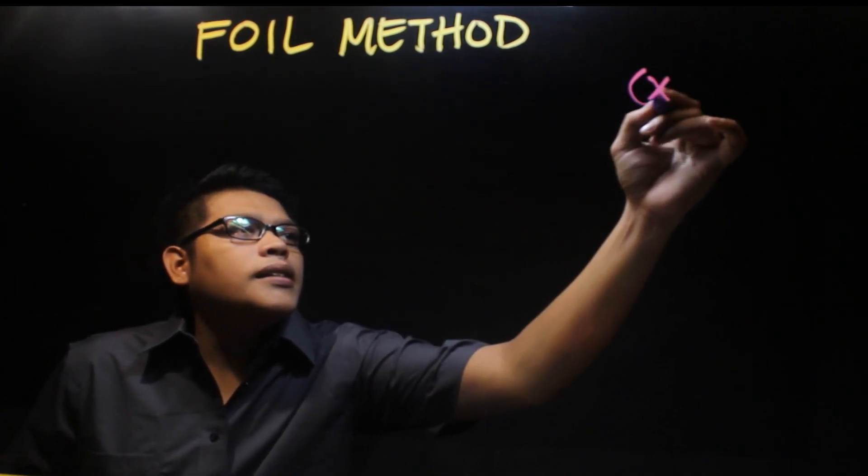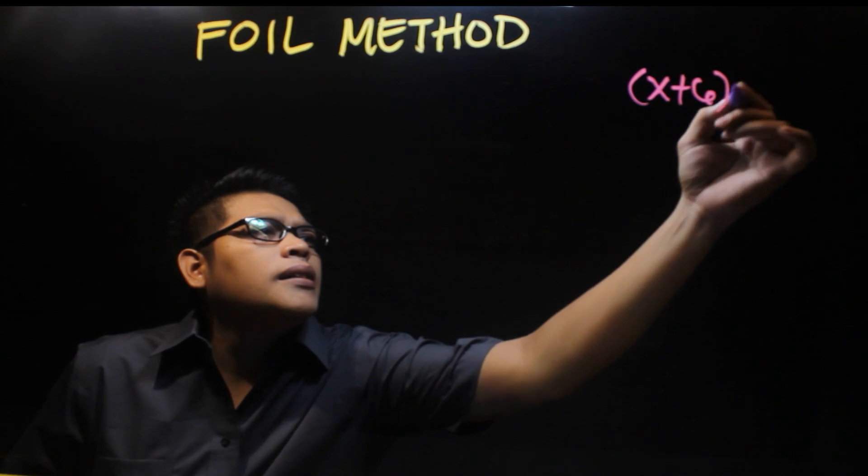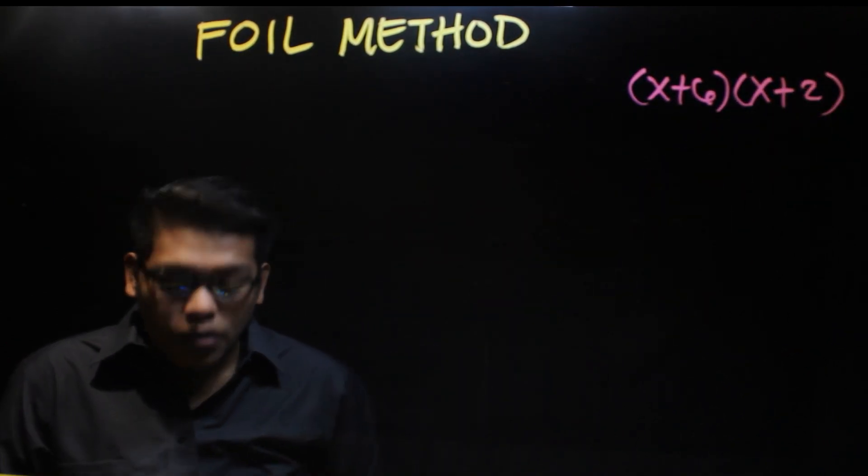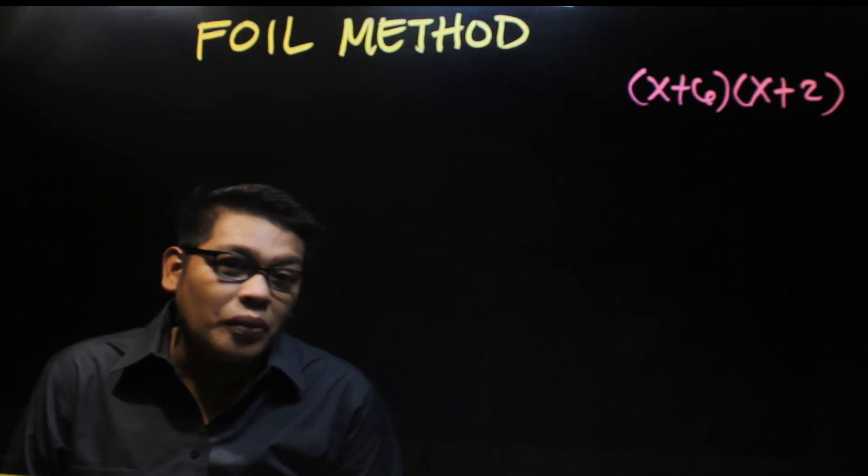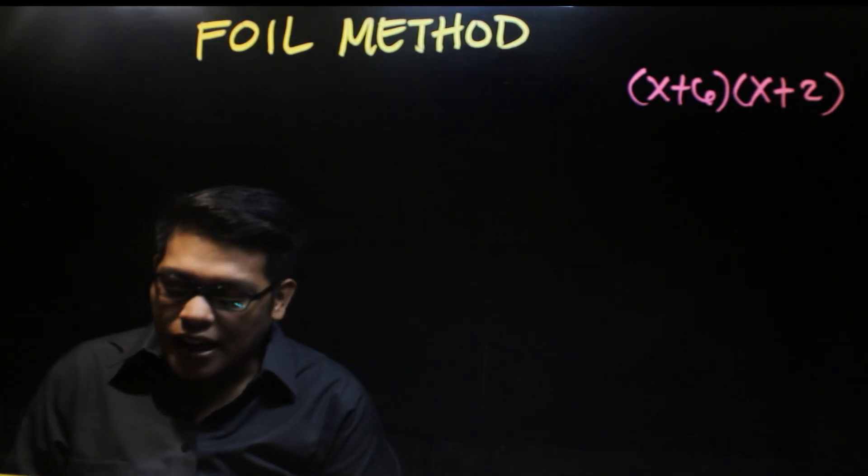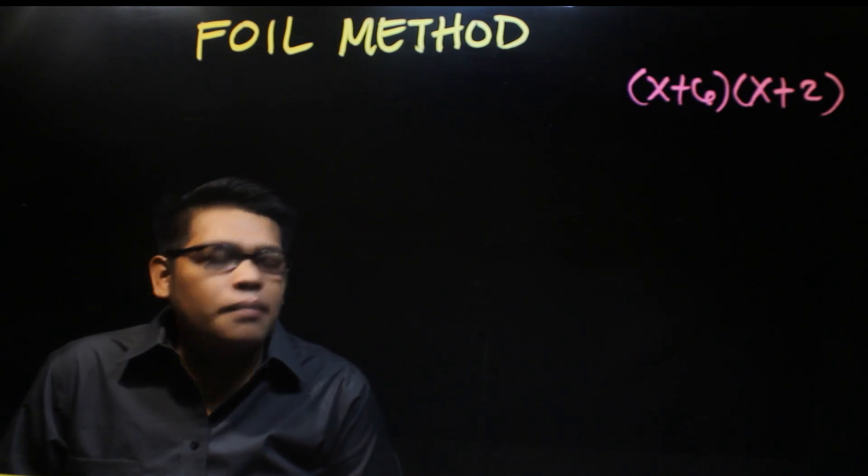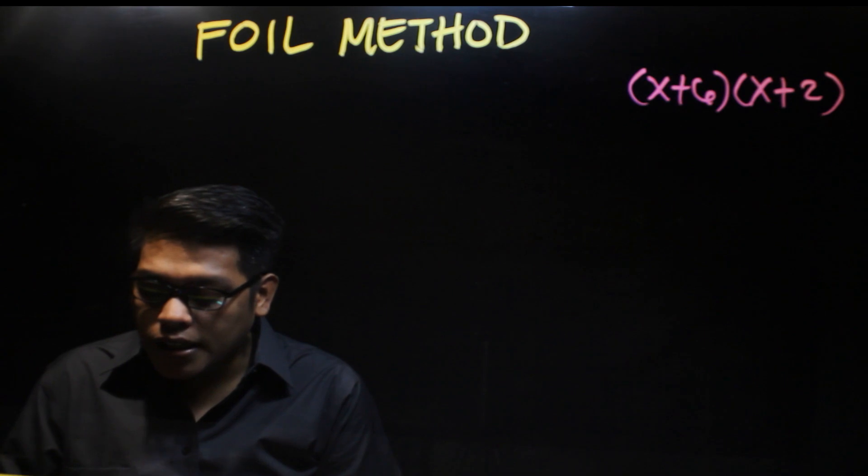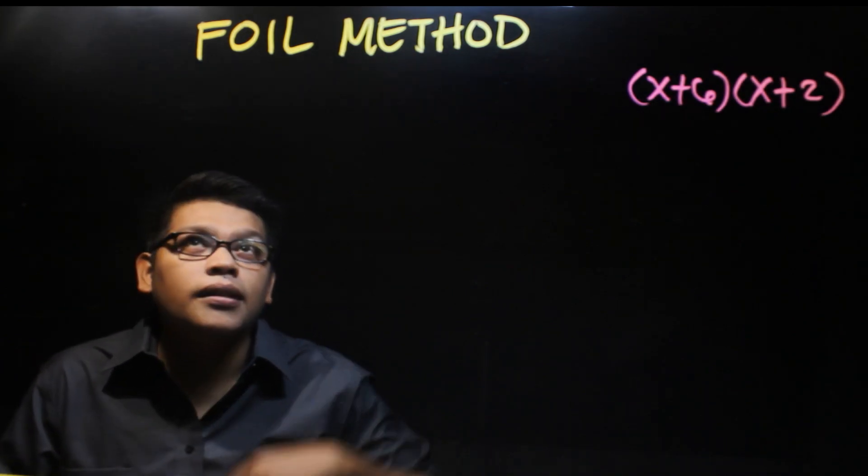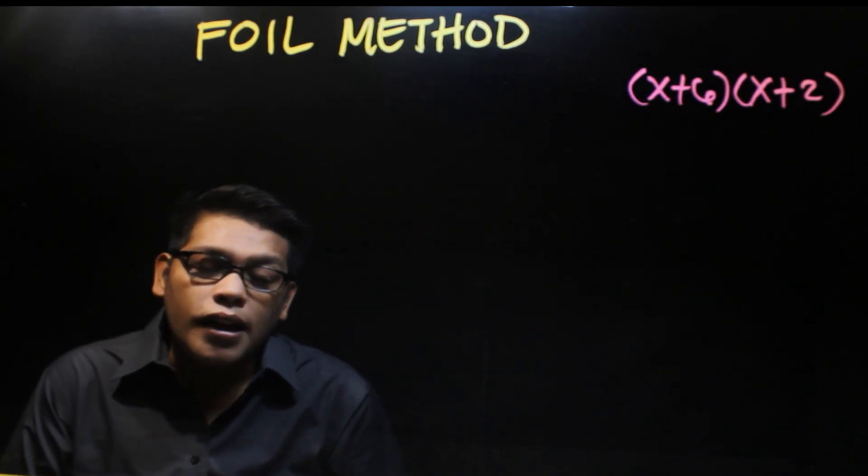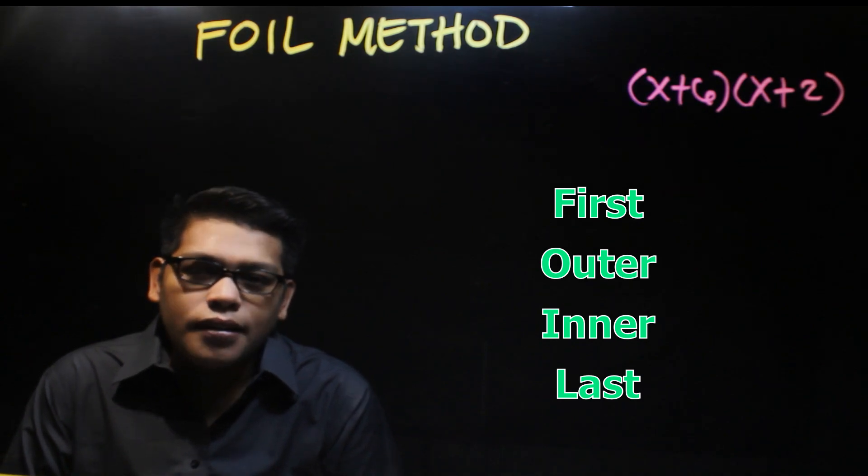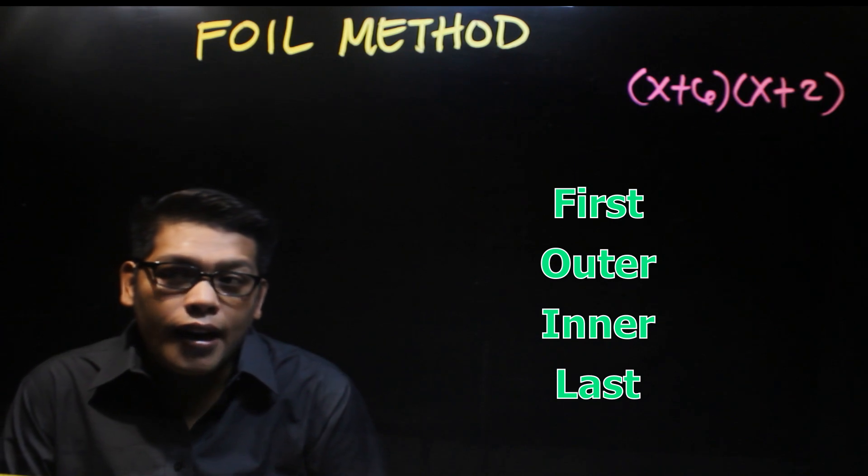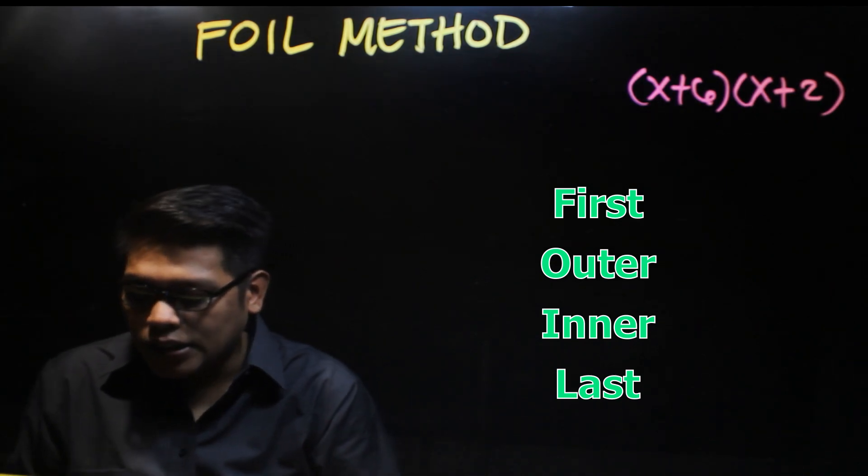It's used in special products, the product of the sum and difference of two terms or two binomials. So in the image, we have (x+6) multiplied by (x+2). In mathematics, when you say foil method, F stands for first, O stands for outer or outside, I stands for inside or inner, and L stands for last.